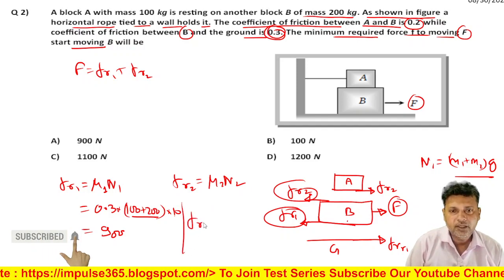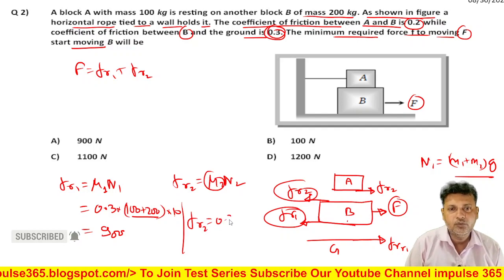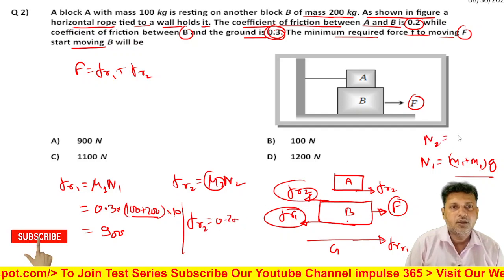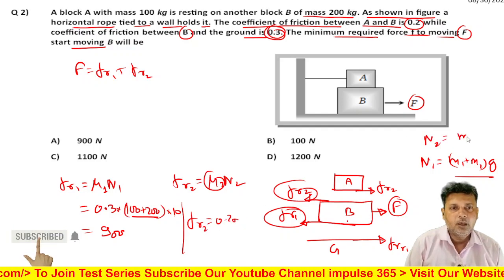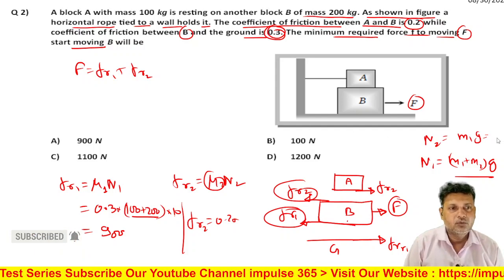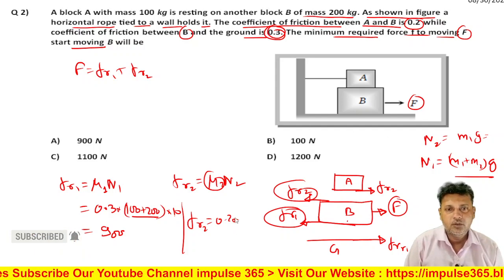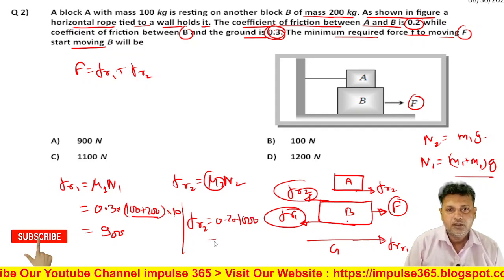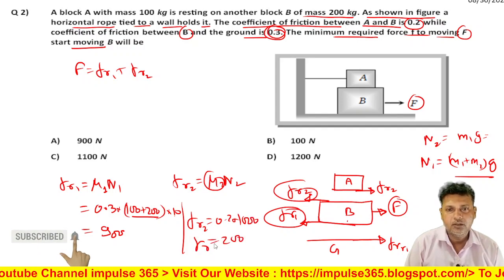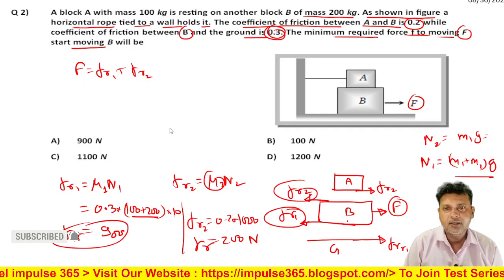FR2 कितना होगा? FR2 = μ2 × N2। μ2 means 0.2। N2 कितना होगा? N2 = M1 × g = 100 × 10 = 1000 N। तो FR2 = 0.2 × 1000 = 200 N।